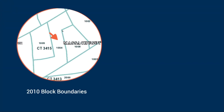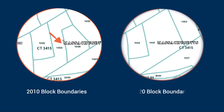Let's check this map. On the first map, you can see the block boundaries for the 2010 Census for an area in Massachusetts. Pay attention to the boundaries of blocks 1004 and 1008. Now look at the same area for the 2020 Census. Not only have the block numbers changed, but the two blocks from 2010 now form one block, number 1003. And the boundary between the old blocks 1008 and 1003 has changed.